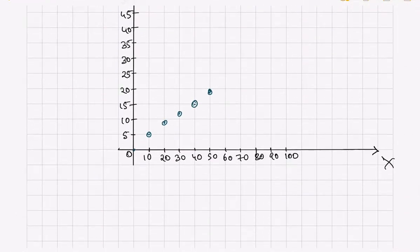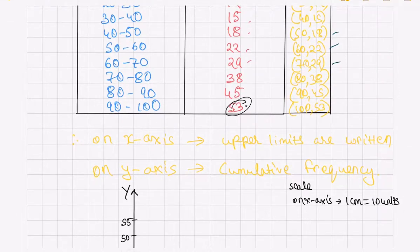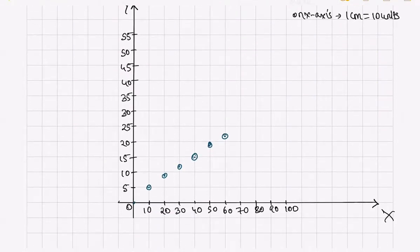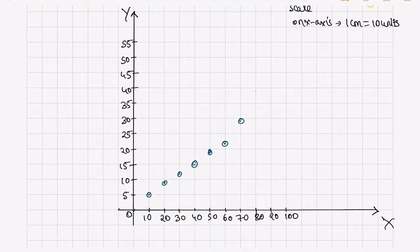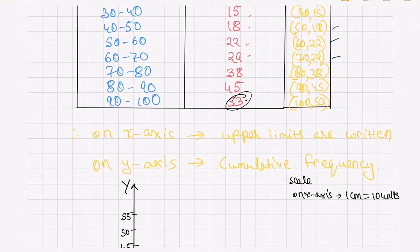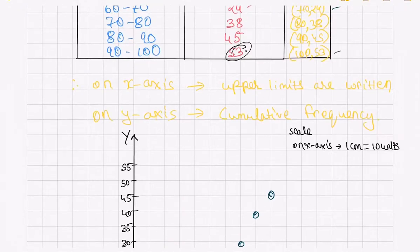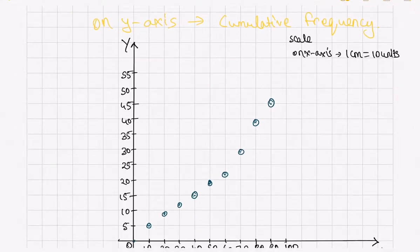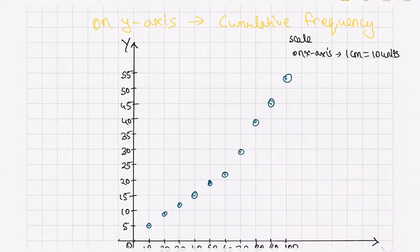Next is (60, 22) — 60 is here and 22 should be somewhere here. Then (70, 29) — 29 must be somewhere just below 30, which is here. Next is (80, 38) — 80 is here and 38 should be here. Then (90, 45) — 90 is here and 45 is here. The last one is (100, 53) — 100 is here and 53 should be here. We have now plotted all the points.